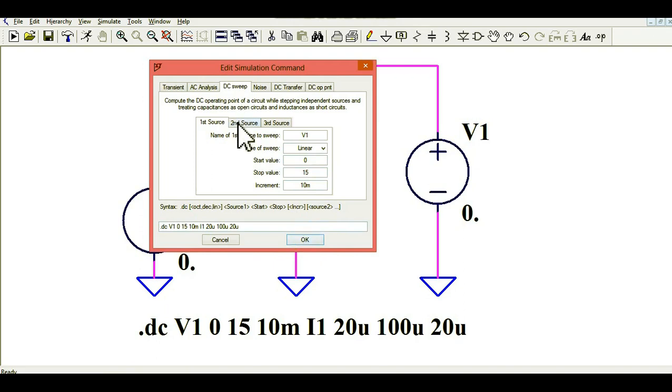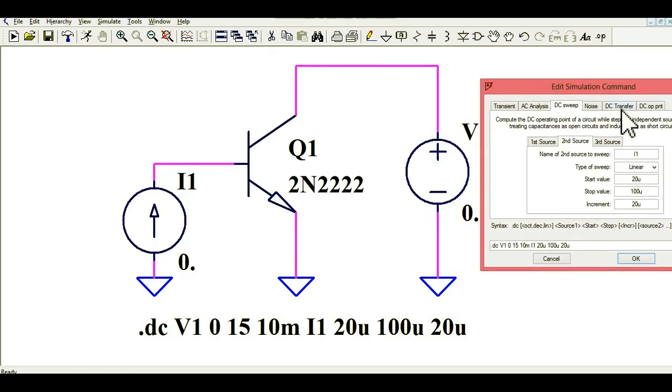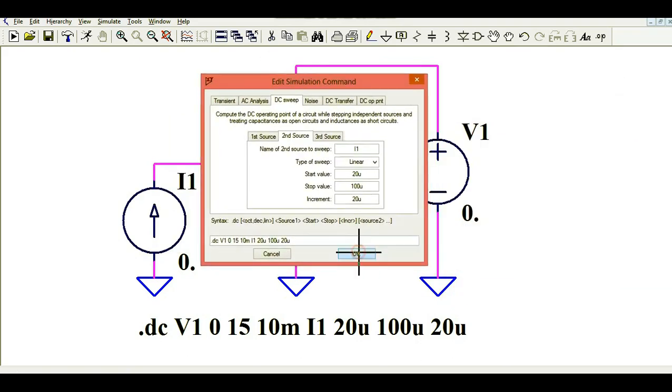If you look at the second sweeping source that is I1, the start value is 20 microampere, stop value is 100 microampere with the step of 20 microampere. What we are doing here is basically we are doing the DC sweep. We are sweeping the first source like V1 and changing the impact. We are also sweeping the second source that is I1 and we are seeing the effect.